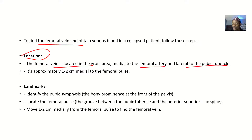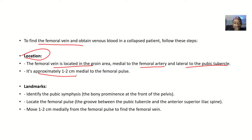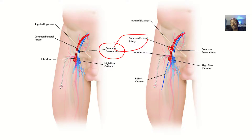The femoral vein is also lateral to the pubic tubercle. More specifically, it is approximately 1 to 2.5 centimeters medial to the femoral pulse. The femoral artery is what you feel pulsating, so once you feel that pulse, move about one to two centimeters medially and you will find the femoral vein.